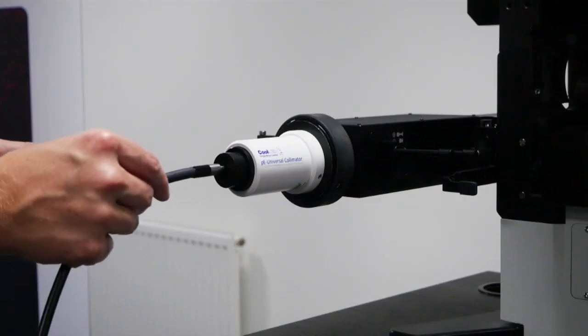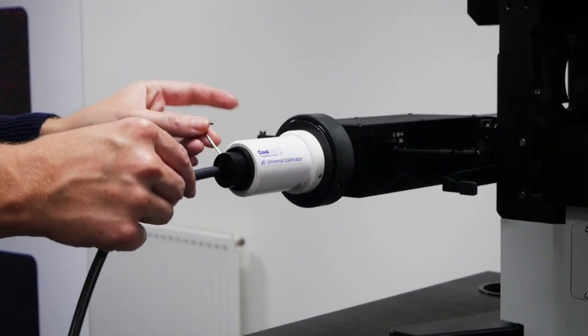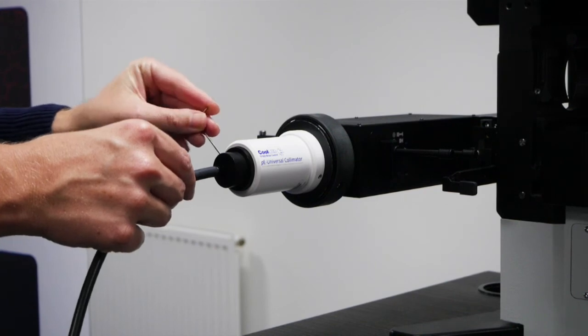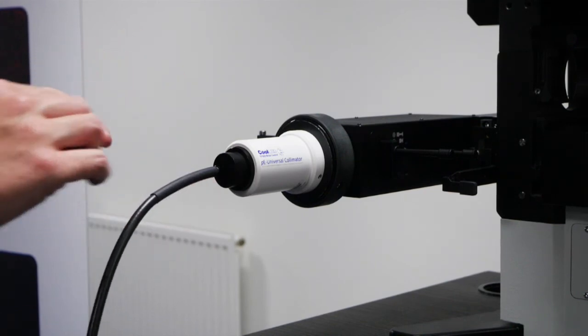The end of the liquid light guide can now be inserted into the PE universal collimator and secured using the grub screws.